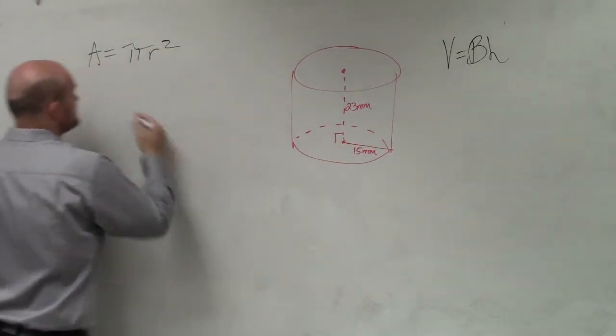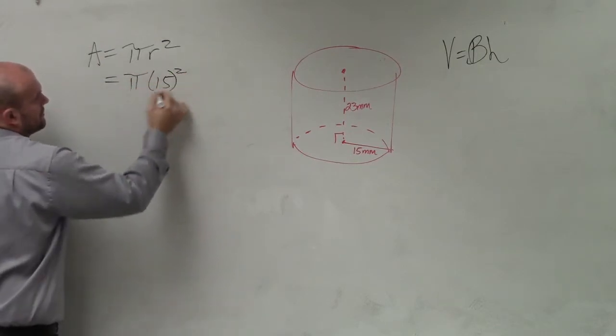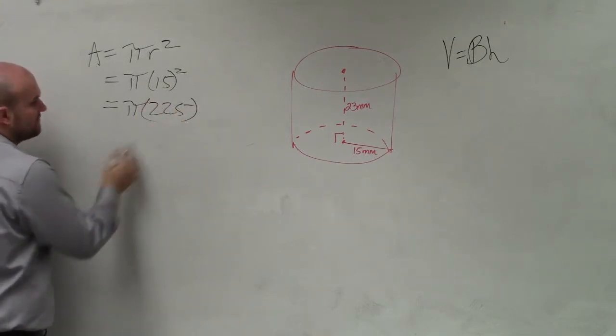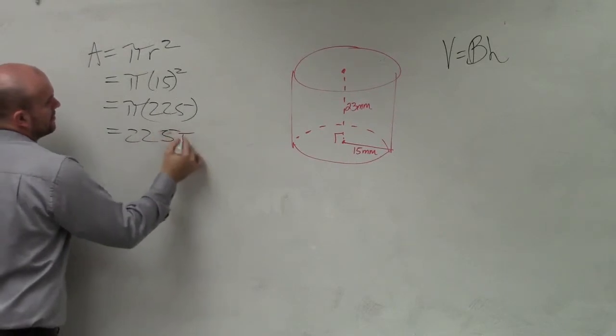In this case, our radius is 15. So it's 225 times pi, which we usually like to write 225 pi.